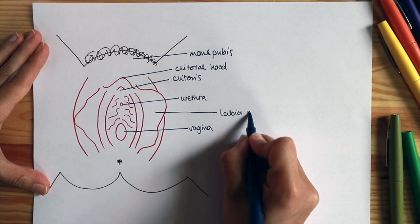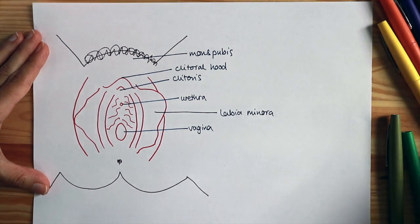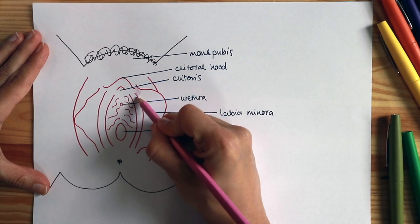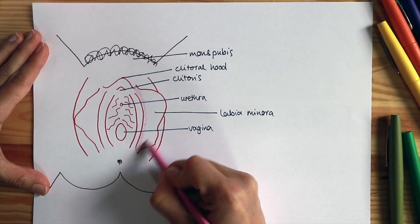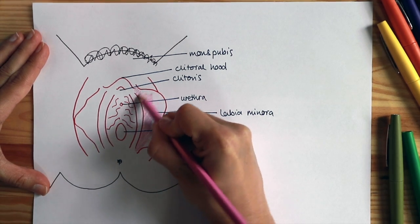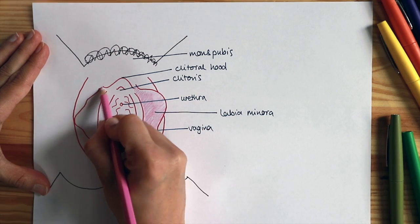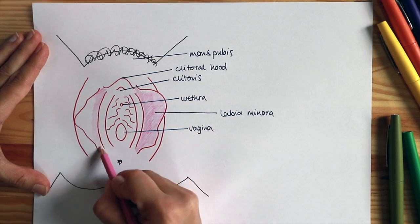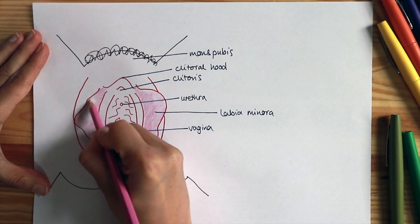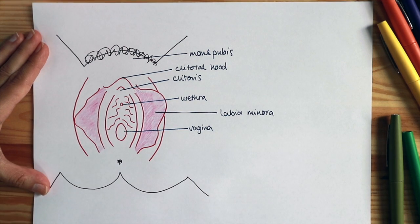Then we have the labia minora, which are the small lips. These are very pink, often quite red and fleshy. And it's normal for them to be very asymmetrical and not equal in size. They can be small or large. And the red appearance is due to the high blood supply that we have in this area.